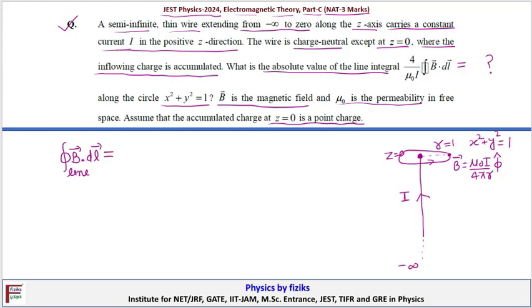Now if we calculate this value, B is given by mu naught I over 4 pi r in the phi cap direction. dl is given by r d phi phi cap where phi varies from zero to 2 pi.